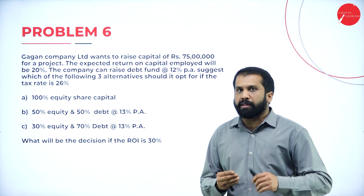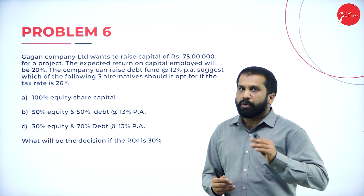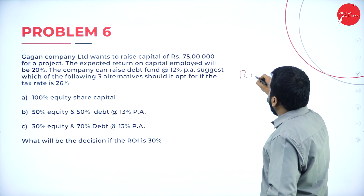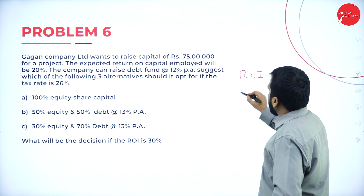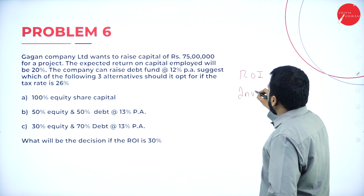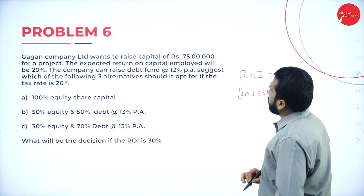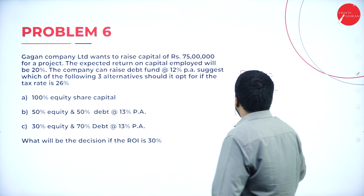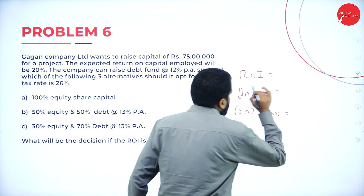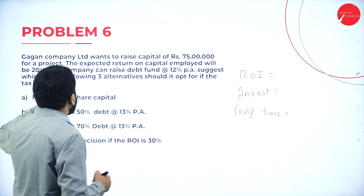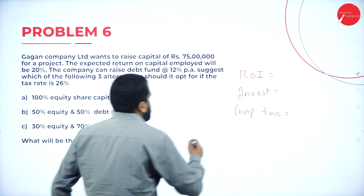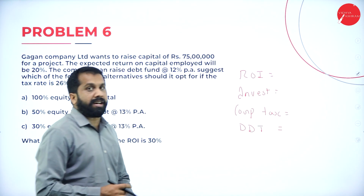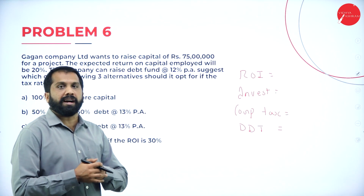As I told you, every problem we have to make a checklist. What is the checklist? First one: return on investment. Second one: what is your investment? Third one: your corporate tax rate. And the next one: your dividend distribution tax. These are the things we are supposed to find out or identify.